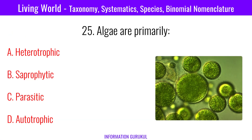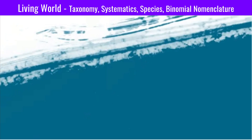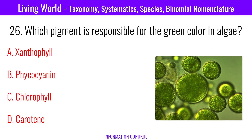Algae are primarily autotrophic. Which pigment is responsible for the green color in algae? Chlorophyll.